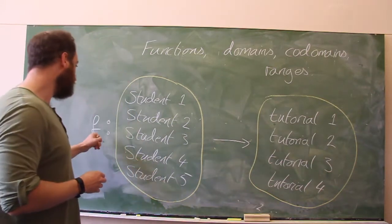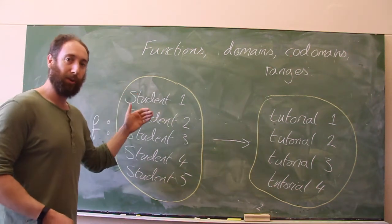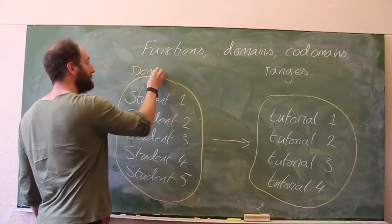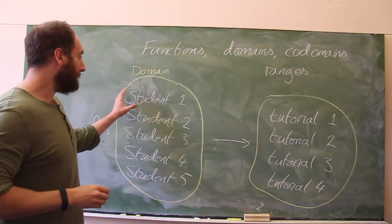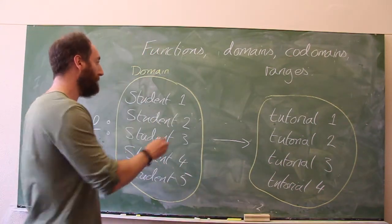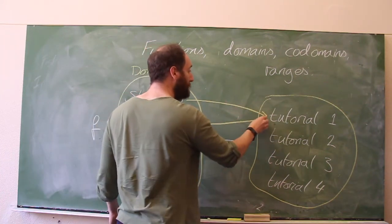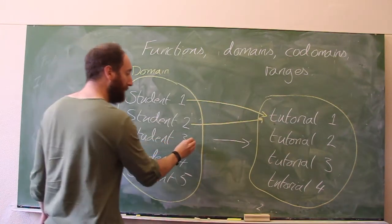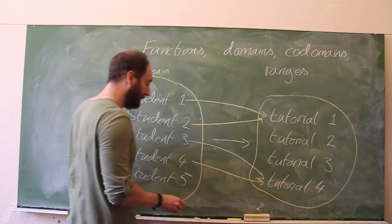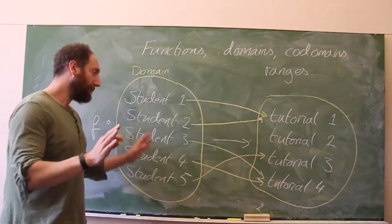What the function definition means is for each value of the student — student 1, student 2, student 3, student 4, student 5 — where this is the domain of the function, it's going to map these into various tutorials. So we might have a function which maps student 1 into tutorial 1, student 2 also into tutorial 1, student 3 into tutorial 4, student 4 into tutorial 4, and student 5 into tutorial 3. That's a perfectly well-defined function.